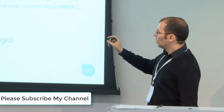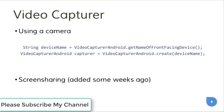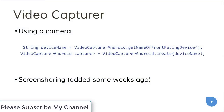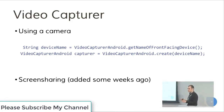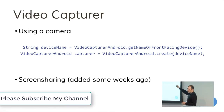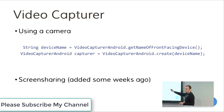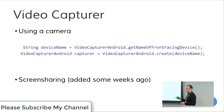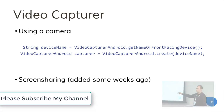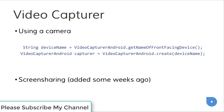The next step is the video capturer. The good thing is WebRTC already provides all the setup to start capturing, so you don't have to know how to use the camera APIs. It's as easy as two lines: you can get the name of the front-facing device and create the video capturer using that name. They already provide implementations for the camera APIs so you don't have to deal with that. They also recently added the possibility to create a video capturer using screen sharing, so you can screen share the view from the application. There are some interesting use cases for that.